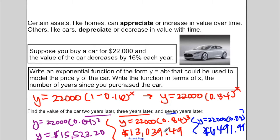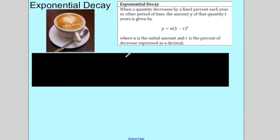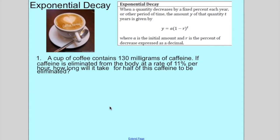So we're going to be looking at exponential growth and decay functions today. This is an example of decay, exponential decay. When a quantity decreases by a fixed percent each year or over a period of time, it's given by this equation: y equals a times 1 minus r to the t.